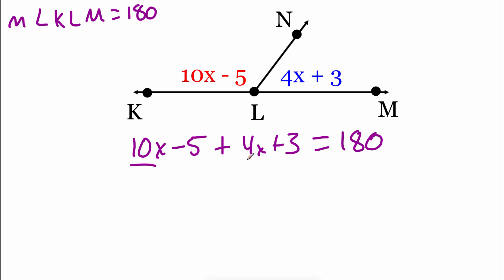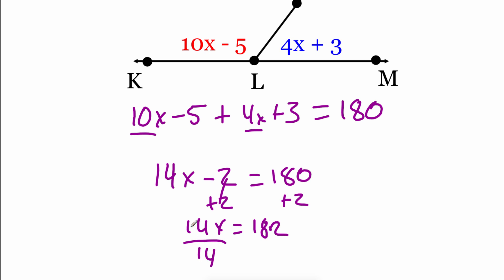Now if we combine like terms, we've got 10x and 4x. So that's 14x. We've got a minus 5 and a plus 3. So it gives us a minus 2, and that equals 180. If we look at getting rid of that minus 2, we'll add 2 to both sides. So we get 14x equals 182. And then if we divide both sides by 14 in order to get rid of that multiplication, we should get x equals 13.